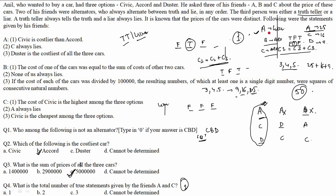Question 3: What is the sum of prices of all three cars? The prices are 25 + 16 + 9 = 50 lakhs. So the answer is 50 lakhs.